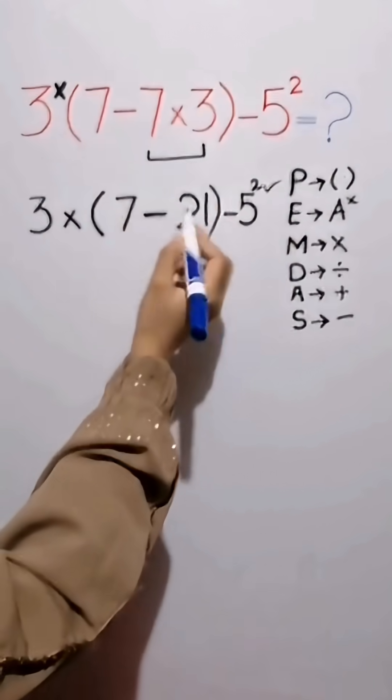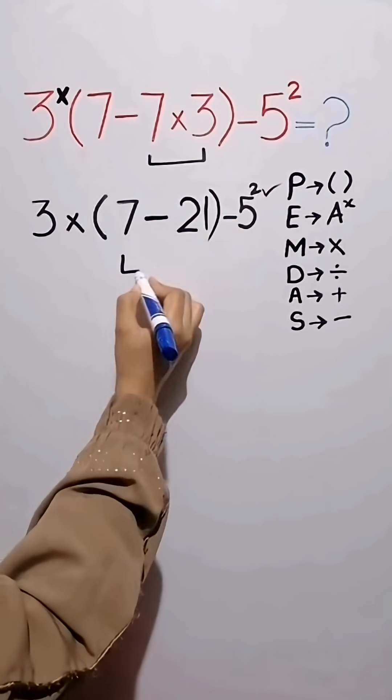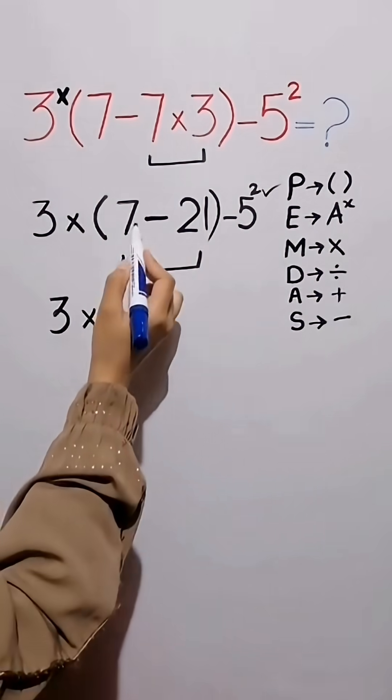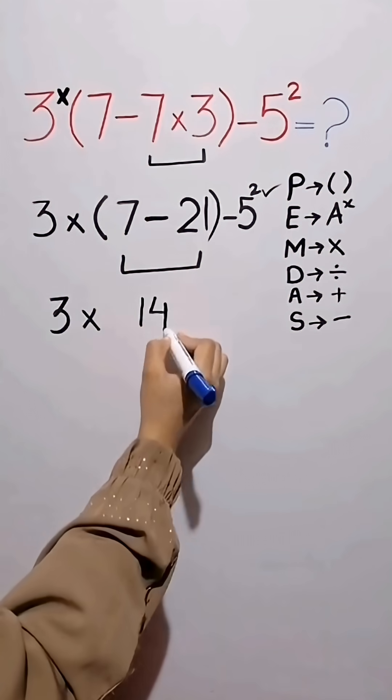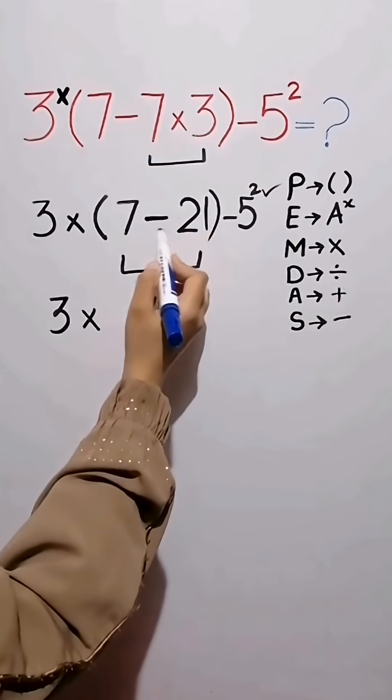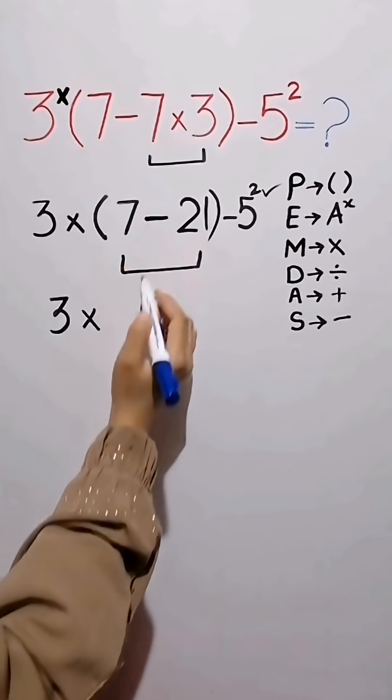Now, again we simplify the parenthesis. 3 times 7 minus 21 equals negative 14. When you subtract a bigger number from a smaller one, your answer becomes negative.